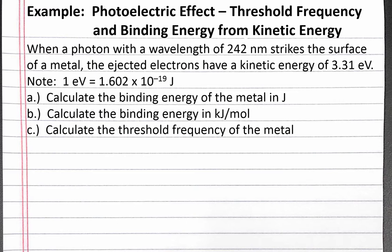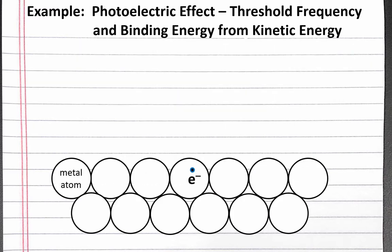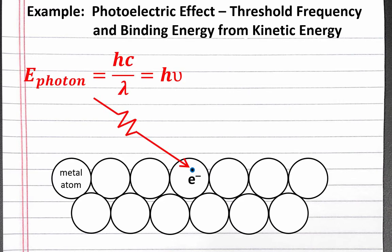Let's look at the photoelectric effect and the equations that govern it. In the photoelectric effect, an electron in a metal absorbs a photon and is subsequently ejected from the metal if the photon has sufficient energy. We can calculate the energy of a photon striking the metal with either the frequency or wavelength of the photon. The energy of the photon equals hc over lambda, which is Planck's constant times the speed of light divided by wavelength. Or, if we have frequency, the energy of the photon is equal to h nu, Planck's constant times frequency. The electron has some energy keeping it in the metal, which is called the binding energy, or phi.